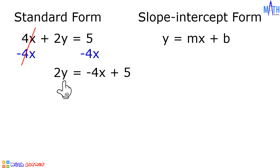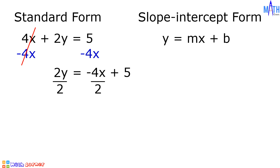To solve for Y, we need to divide both sides of the equation by 2. So we have 2y divided by 2 equals negative 4x plus 5 divided by 2. Negative 4x plus 5 divided by 2 is also equal to negative 4x divided by 2 plus 5 divided by 2. Let us simplify: 2y divided by 2 is equal to Y, negative 4x divided by 2 is equal to negative 2x, and 5 divided by 2 is already expressed in lowest term.